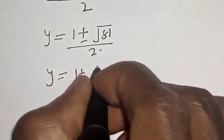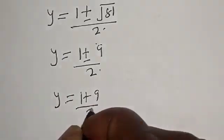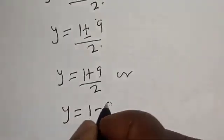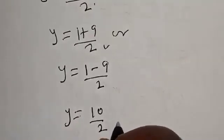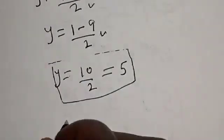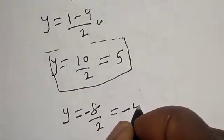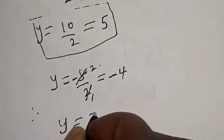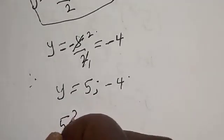So y equals 1 plus 9 over 2, or y equals 1 minus 9 over 2. From the first case, y equals 10 over 2 equals 5. From the second case, y equals negative 8 over 2 equals negative 4. Therefore, the values of y are 5 and negative 4.